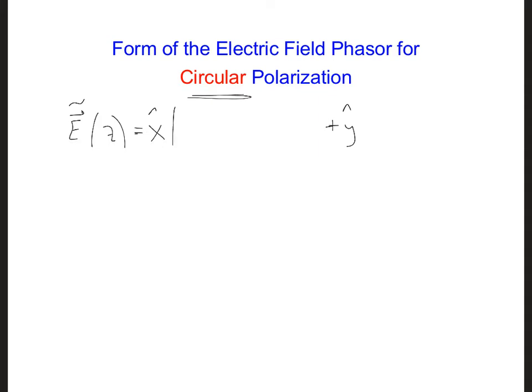In order to trace out a circle, these both have to have the same amplitude. So I'll just say E knot for both of those.